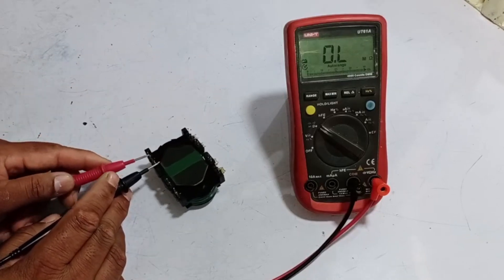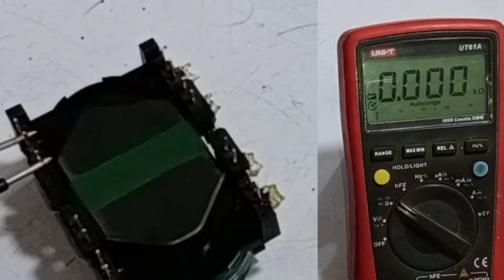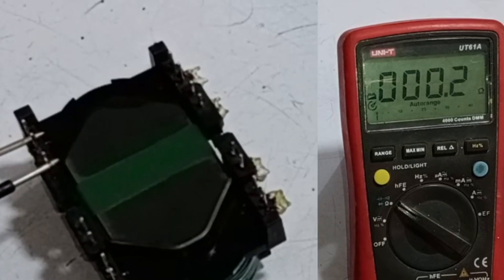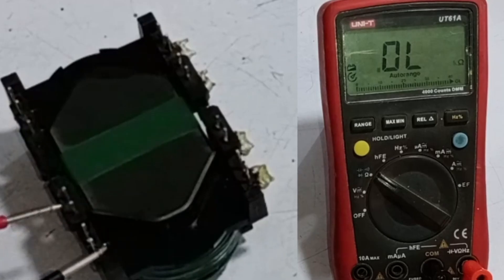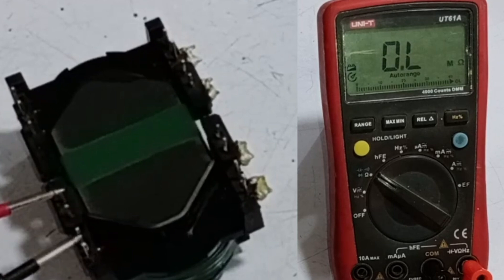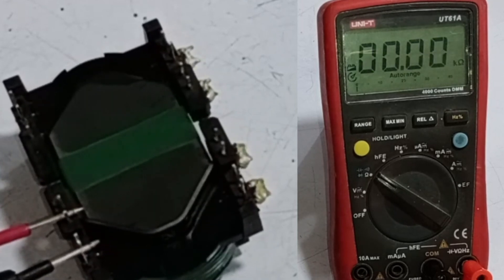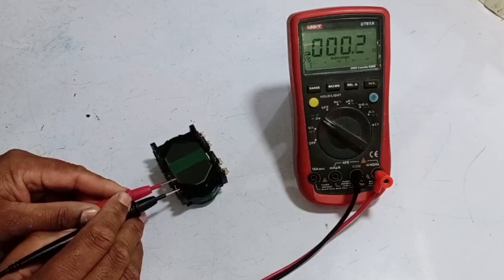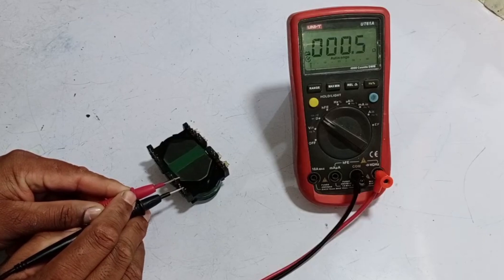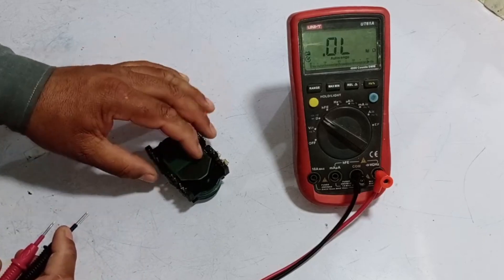Now, the testing of these other wires will be done as follows. You should observe a small resistance here, but the value should not be too high. If the resistance increases significantly, it indicates that the reactor is faulty. Additionally, if any of these wires disconnects, the reactor will not work properly, and it will need to be repaired. This is how you can test it.